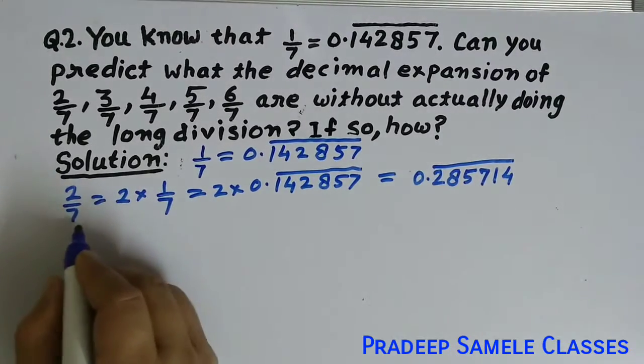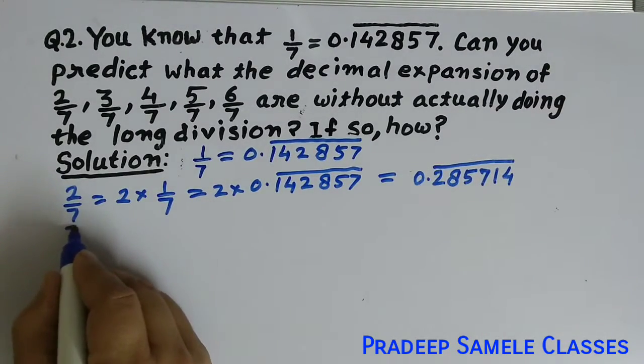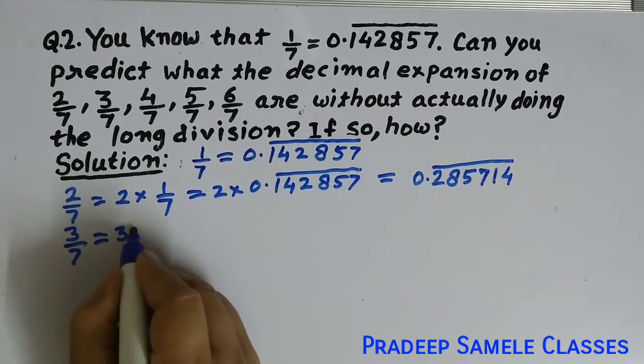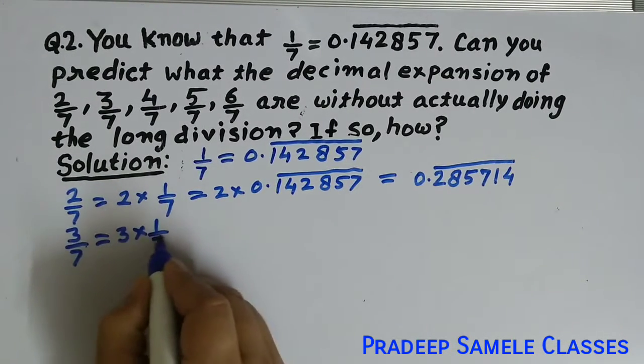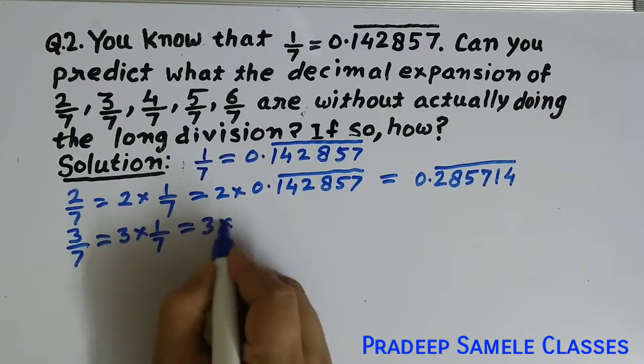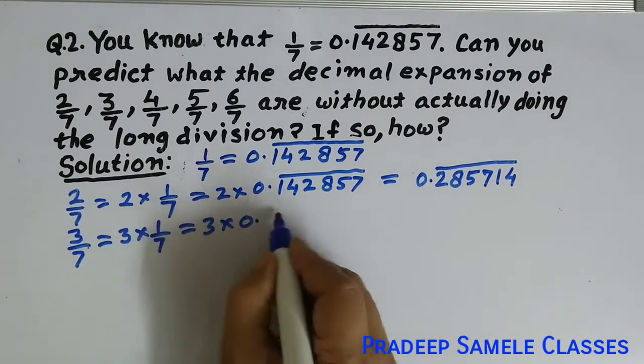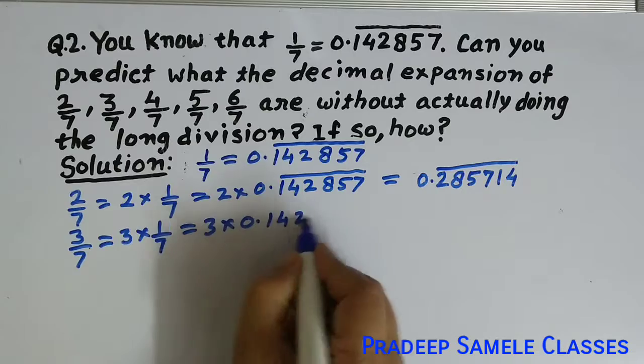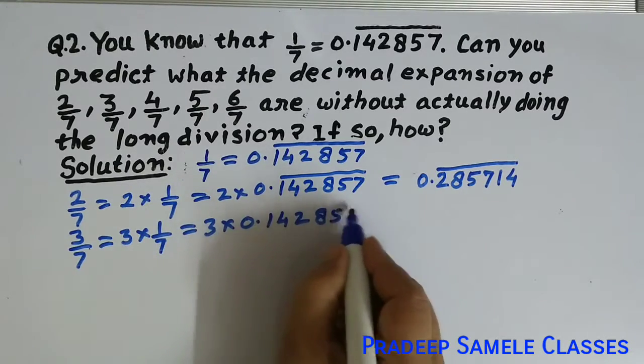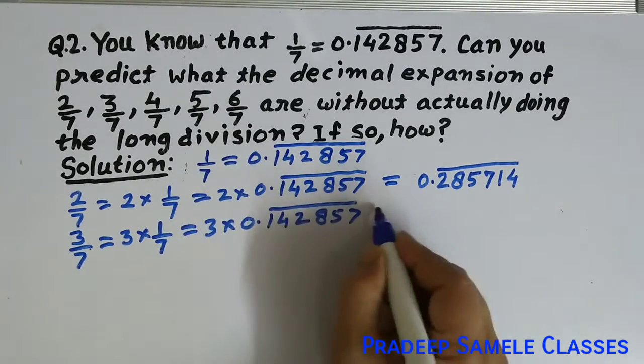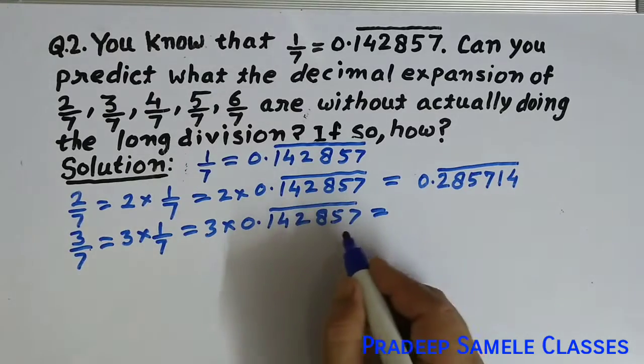Similarly, we will find 3 by 7. So 3 by 7 equals 3 into 1 by 7, which is 3 into 0.142857 bar.